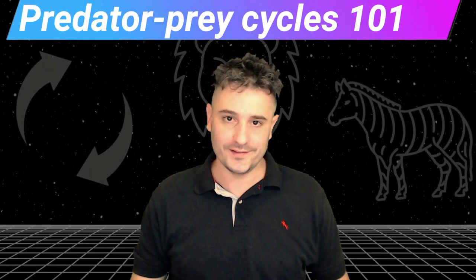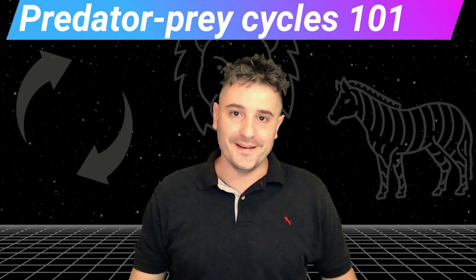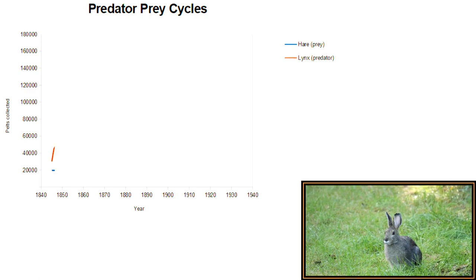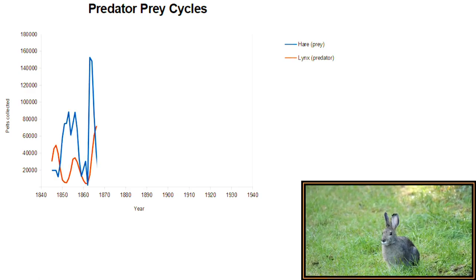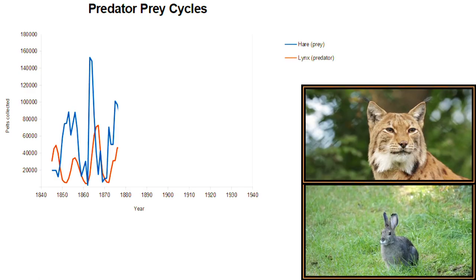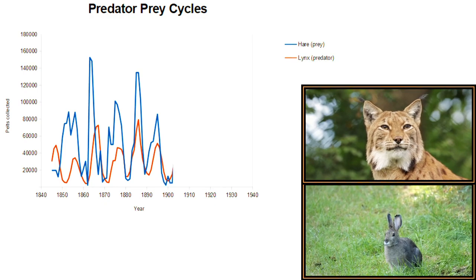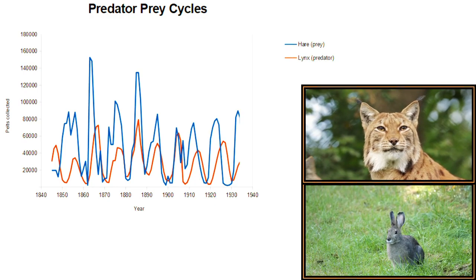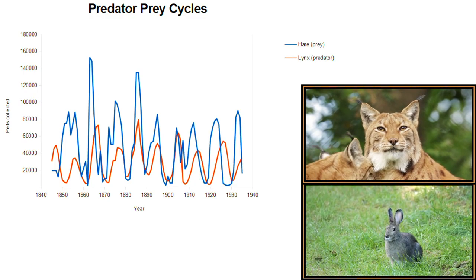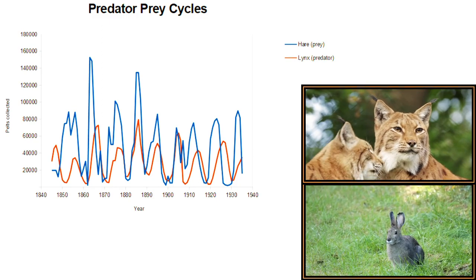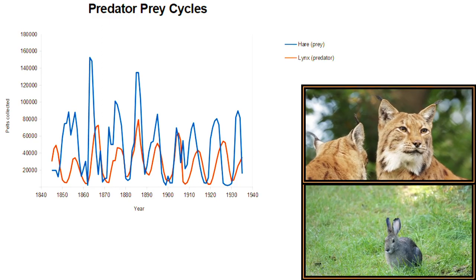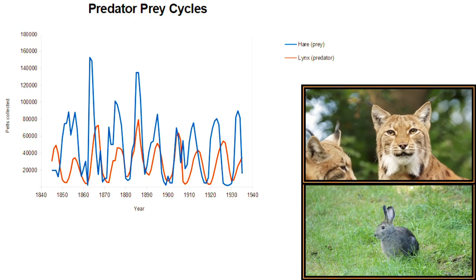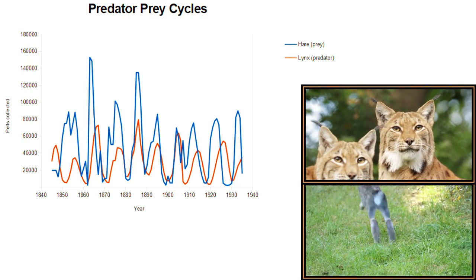Predator-Prey Cycles 101! This graph shows the population of hares and their predator, the lynx, over time. These populations are healthy and their ecosystem is stable. But if these predator-prey populations are stable, why are they fluctuating so wildly?